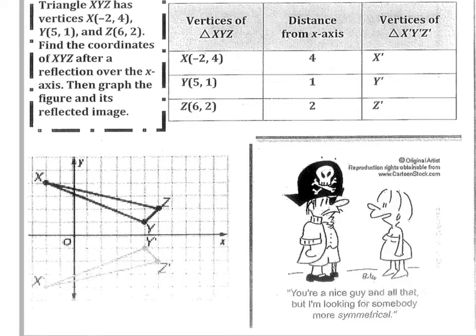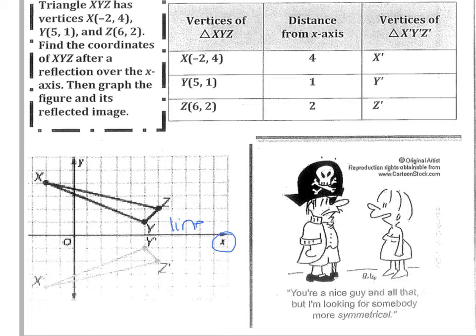Let's take a look at this example. We have triangle X, Y, Z — and you can see X, Y, Z on the graph. And then down here we have X prime, Y prime, and Z prime. This triangle has been reflected over the X axis, which is our line of reflection. We have reflected our triangle over the X axis. Let's look at what happened to it. Here are the vertices of triangle X, Y, Z.